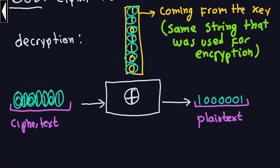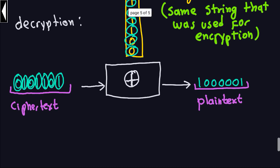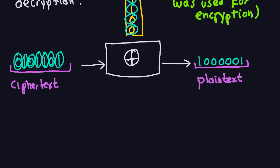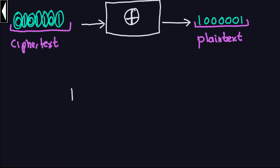I claim now that this is the plain text. And you remember what the plain text was - it was the capital letter A. That is actually the binary representation in ASCII of the capital letter A. If you don't believe me you can double check, because what happens here is you take the decimal representation of that. The number is going to be: one, zero, zero, zero, zero, zero, one - a one, five zeros, and a one.